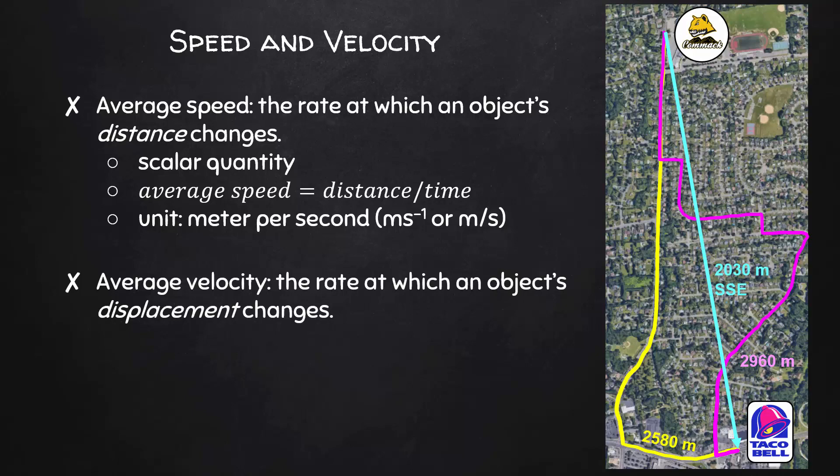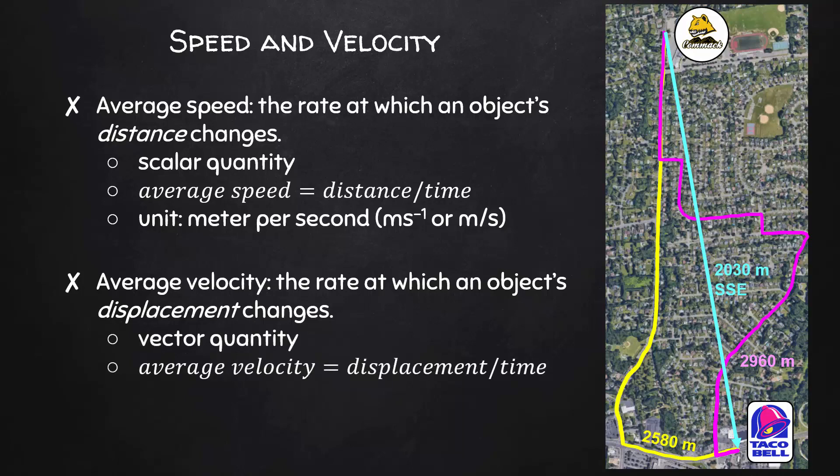Average velocity is the rate at which an object's displacement changes. This is a vector quantity because it includes direction. We could write that average velocity equals displacement divided by time. The units for velocity are also meters per second.